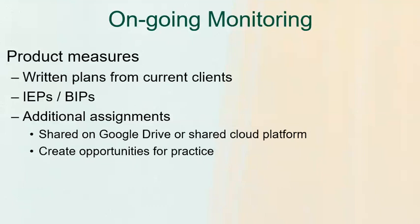Product measures you might look at to track ongoing progress include written plans from current clients or learners that your trainee is supporting. You might review the IEPs and behavior intervention plans they are writing for their learners. You might also conduct additional assignments. We have written assignments — and a few video assignments — for every topic we cover in group supervision, and those topics and assignments are shared on Google Drive or any cloud platform, creating opportunities for practice.